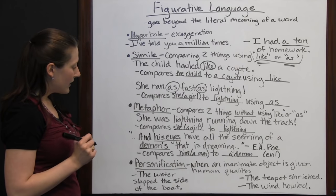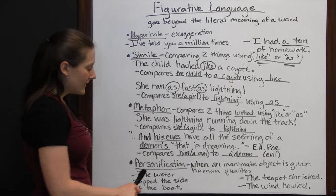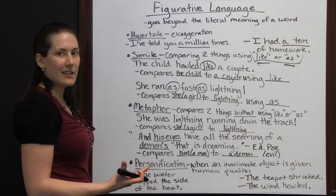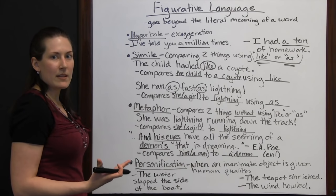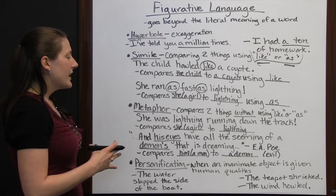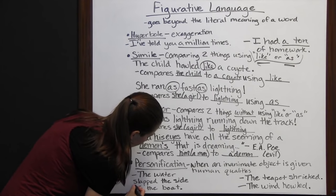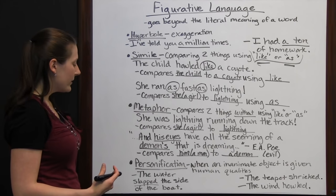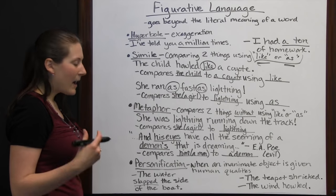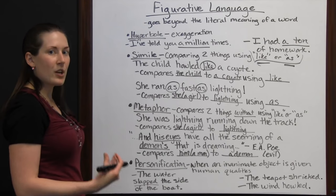The last piece of figurative language we'll discuss is personification — when an inanimate object is given human qualities. Inanimate objects are things that are not alive: a chair, a teapot, the wind, water. The example 'the water slapped the side of the boat' uses 'slapped' — can water actually slap like a person? No, but it makes you think of the action of slapping and the sound you might hear, putting that image in your mind. That's why they use this word and personify the water.